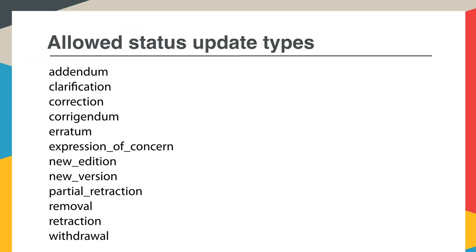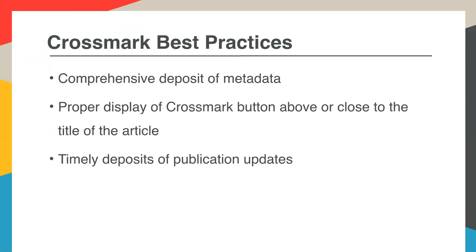There is room to put information about minor changes in the Crossmark box, and I'll show you an example of that in a moment. But in terms of saying this piece of content has been updated and having the Crossmark box reflect that, it has to be one of these 12 types of updates that you submit to us in your metadata.